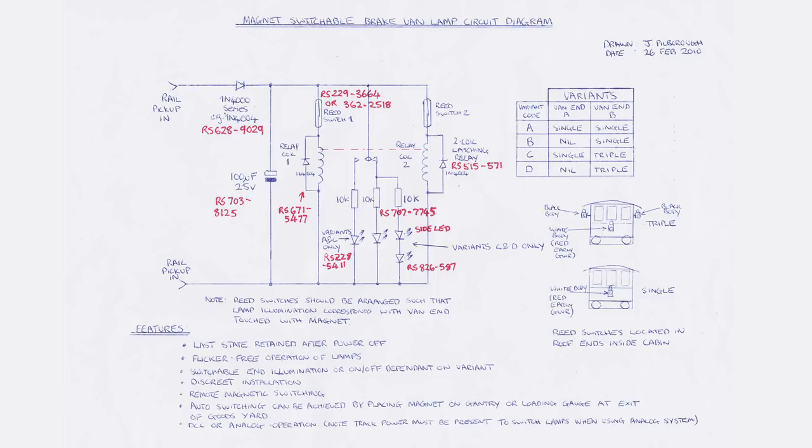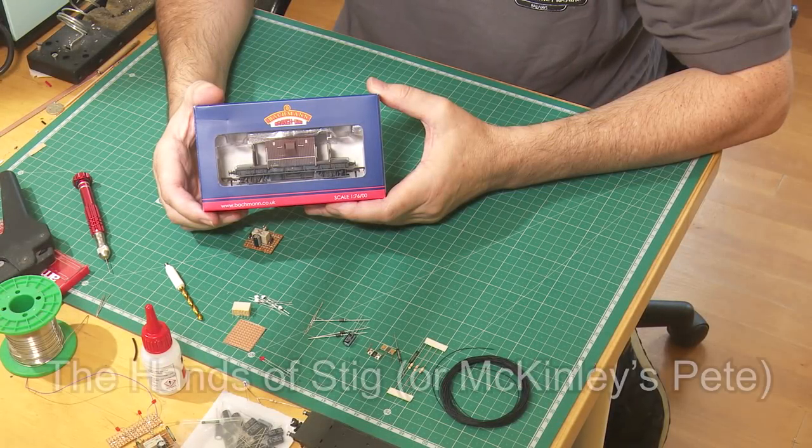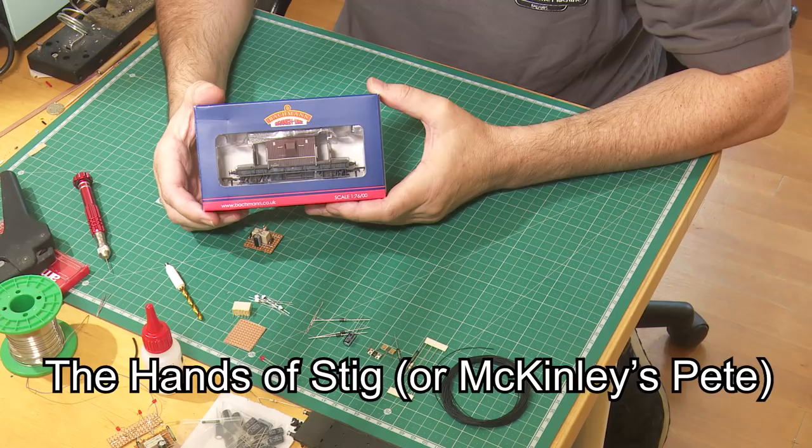The soldering is not necessarily for the novice. The subject for the modification is a standard Backman 21-ton Guardsvan.